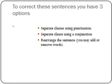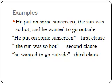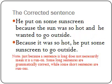Let's see the coming example. Here I have three clauses. The first one is: he put on some sunscreen. The second one is: the sun was so hot. And the third one is: he wanted to go outside. So let's think together how to put these three clauses together. A possible answer is: he put on some sunscreen because the sun was so hot and he wanted to go outside. Or we can simply say: because it was so hot, he put on some sunscreen to go outside.